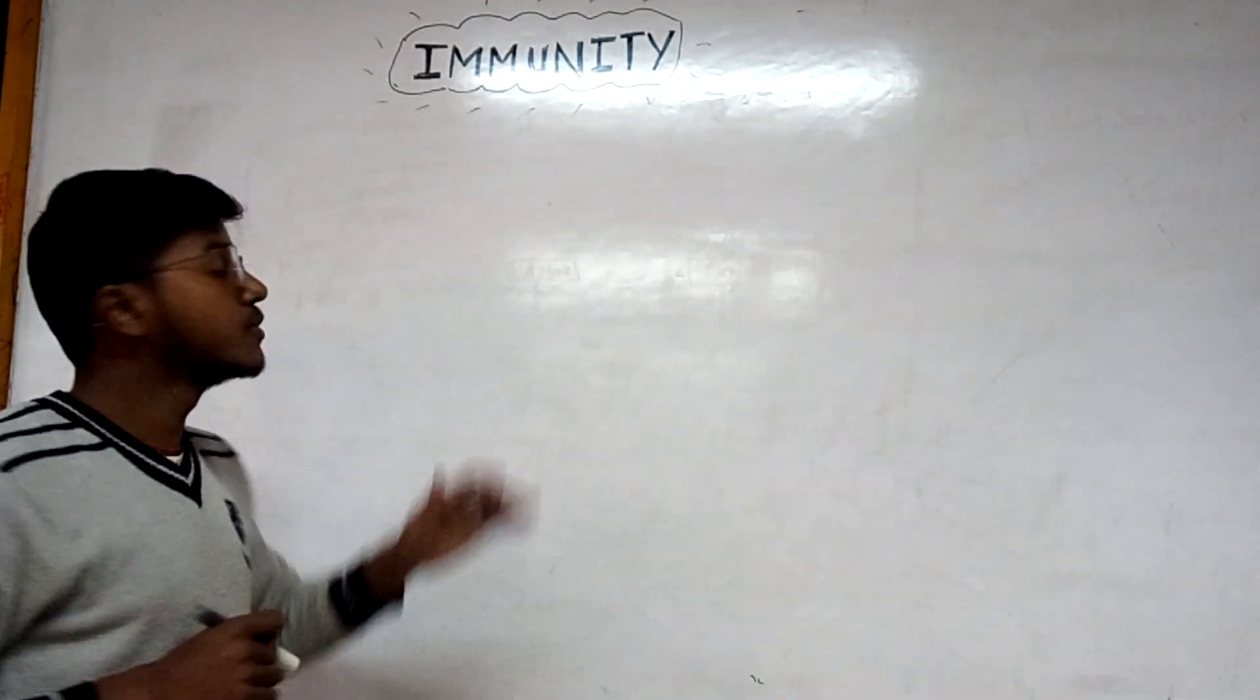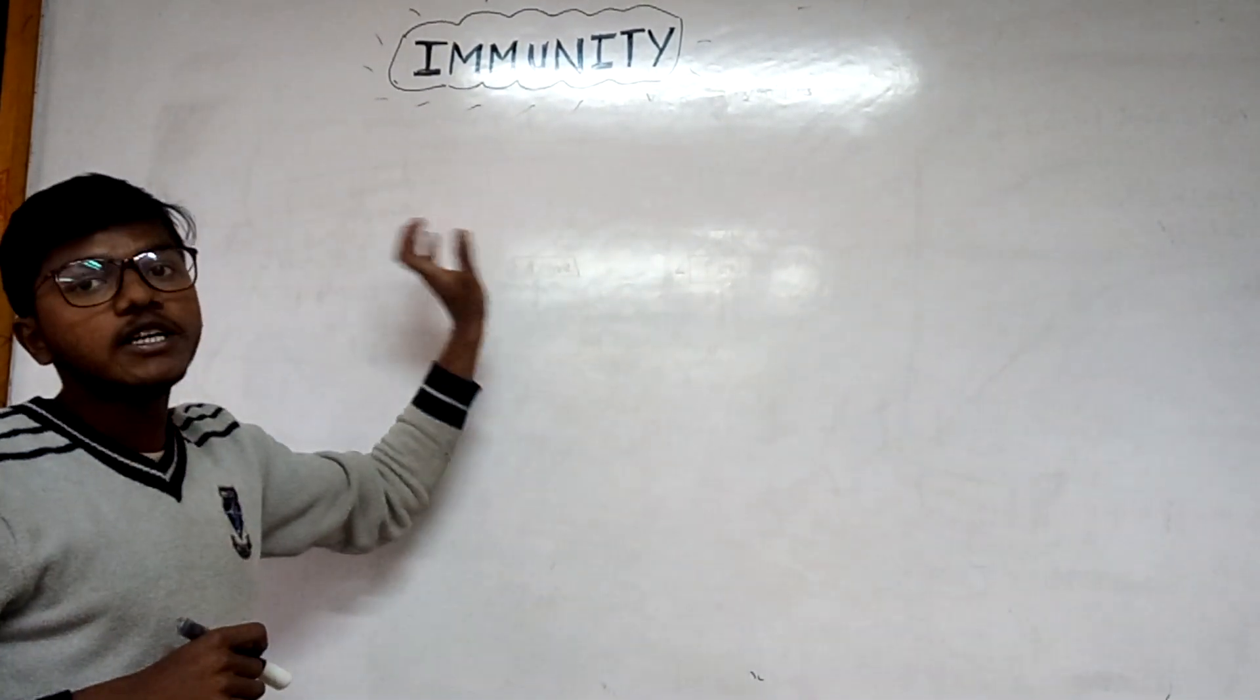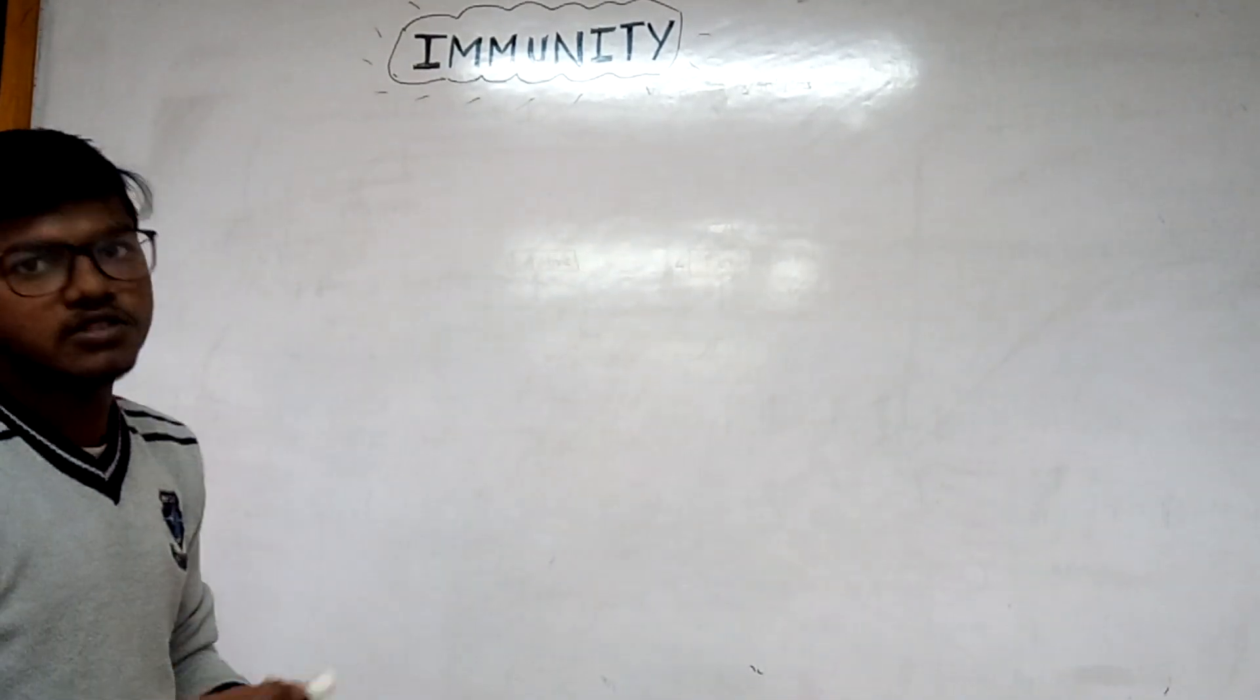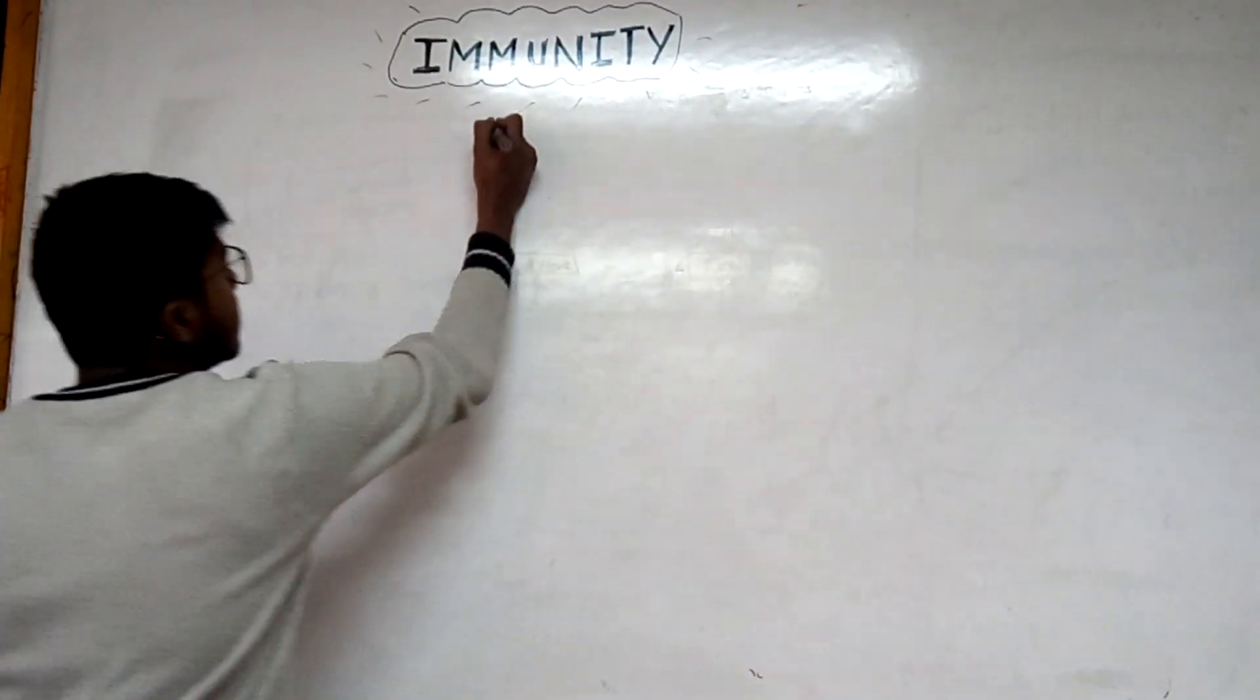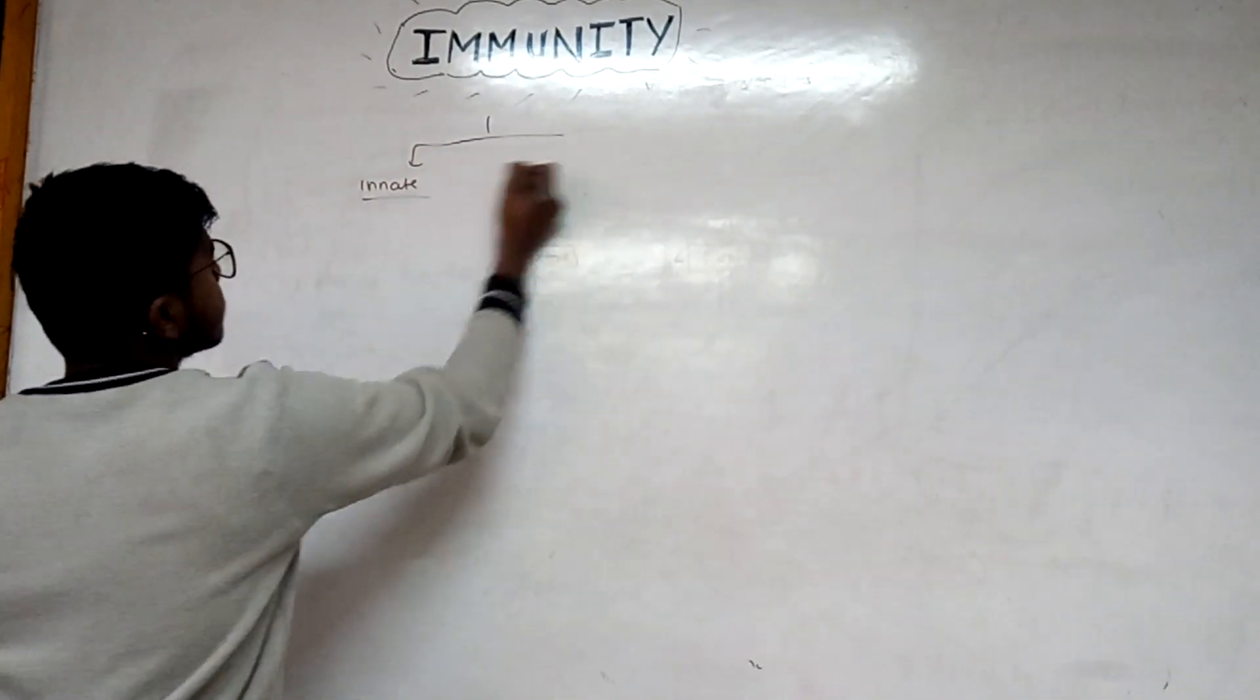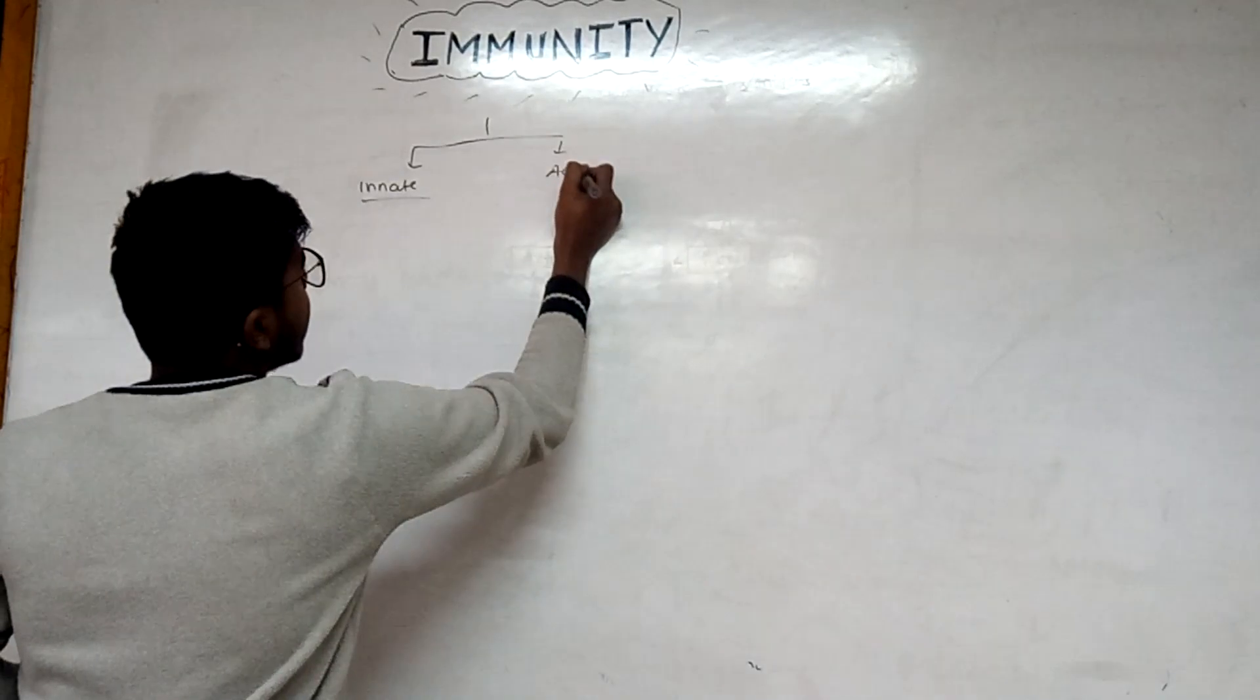So what actually is immunity? Immunity is the resistance provided by an organism towards a particular pathogen, microorganism, or toxic molecule. It is mainly of two types: innate immunity and acquired immunity.